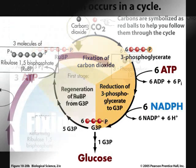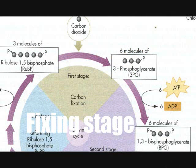Alright, now it's time to get a bit complex. Fixing phase: the RuBP joins to CO2 that comes in. Phosphoglycerate is fixed by the Rubisco within. 6 ATP come in, adding 6 phosphates to make 6-bisphosphoglycerate.